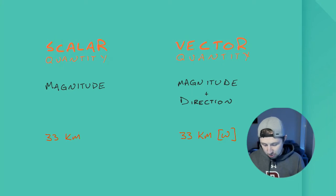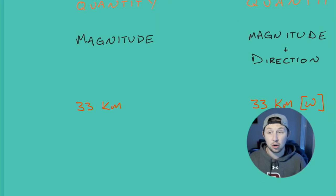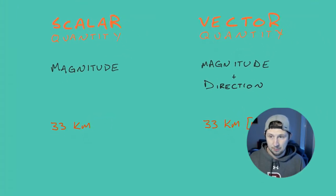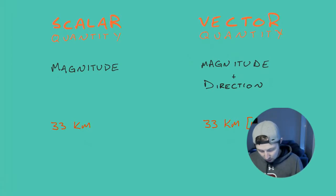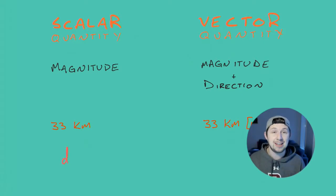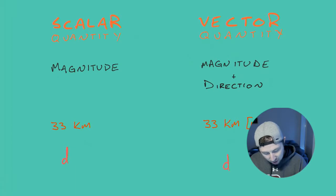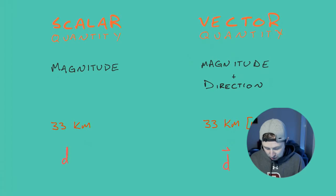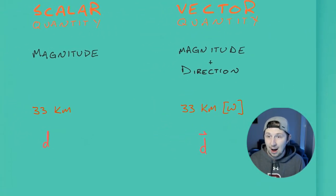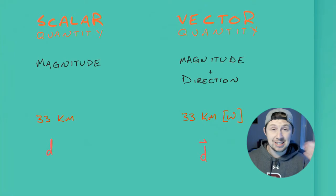Here's what would distinguish between the two if we were to write it out. A scalar quantity — the distance we travel — we would call that D. However, if you were to go just as the bird flies from my house in a straight line, this is called our displacement, and we write that with a little arrow over top. Distance versus displacement.